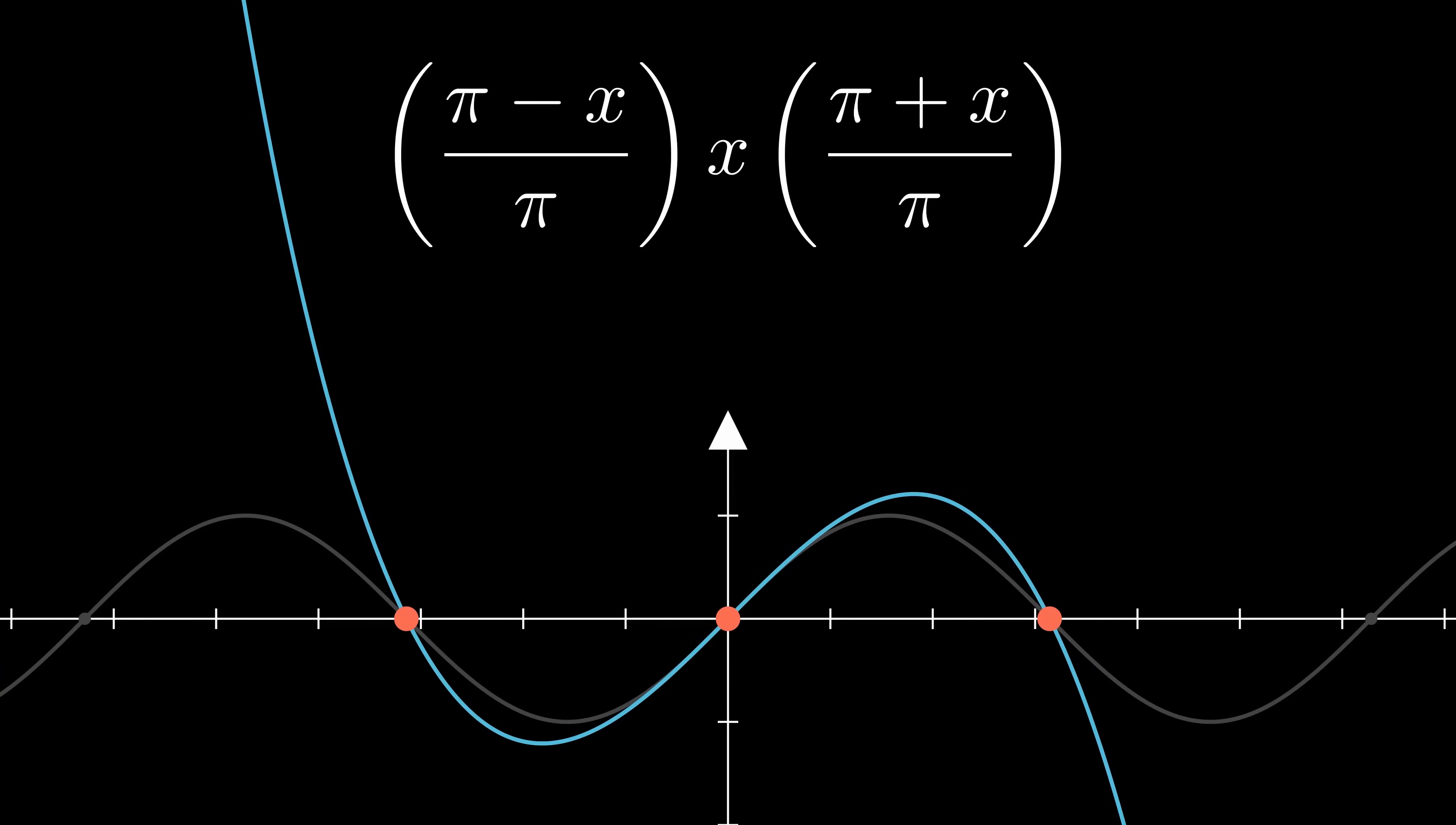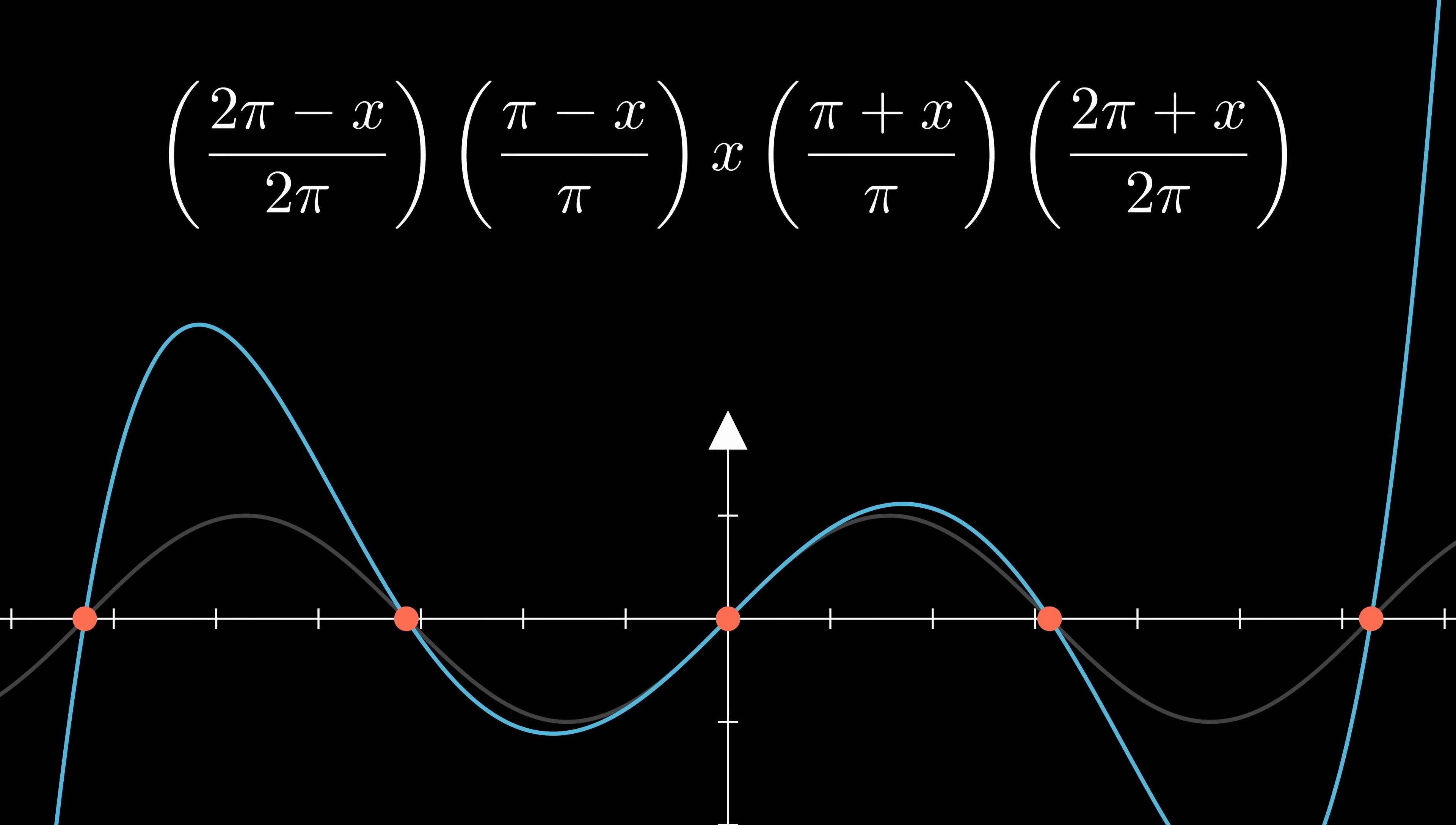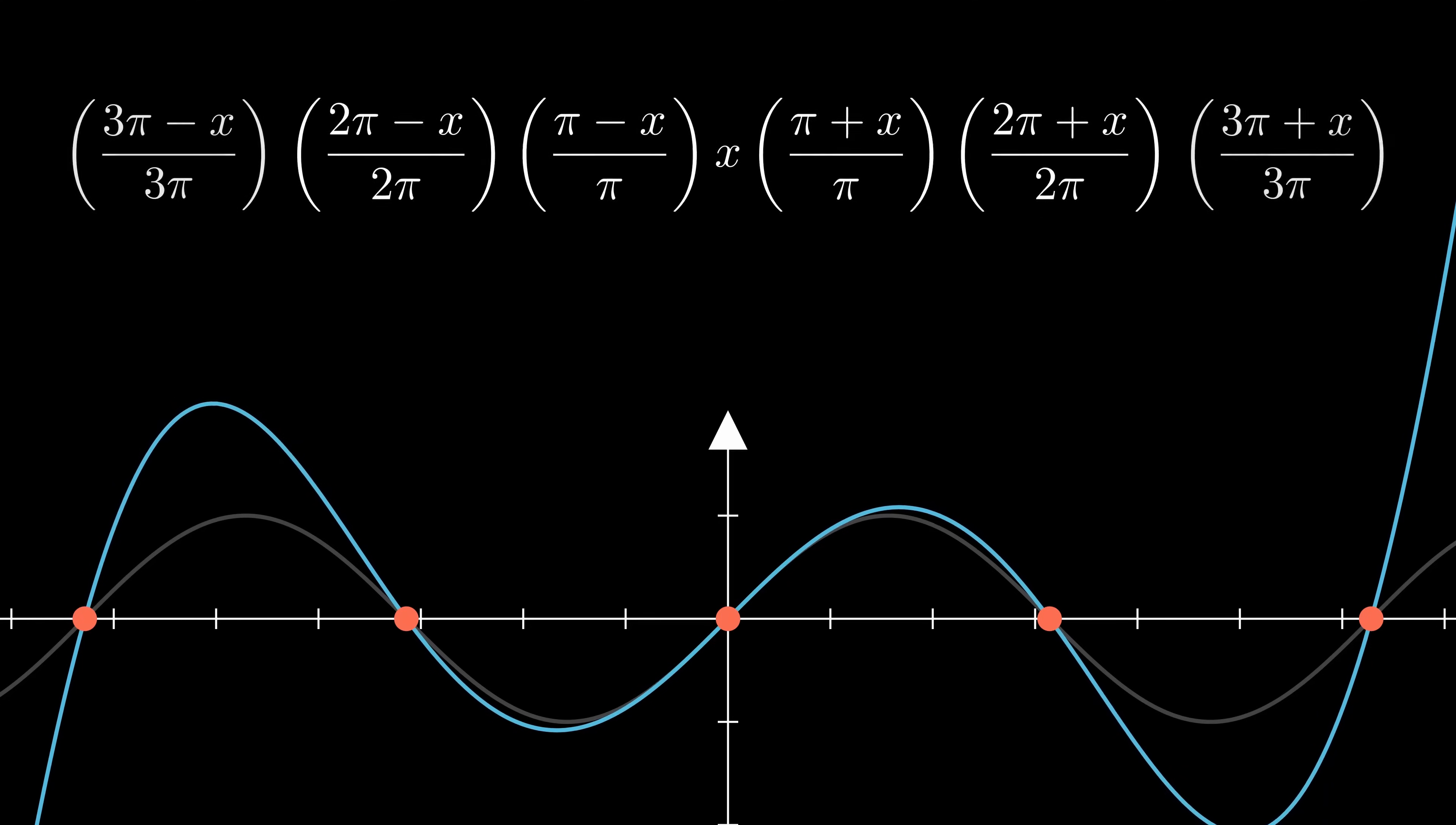Now our approximation is looking a lot better, so let's add the next two zeros at 2 pi and negative 2 pi. I've already divided both of these by 2 pi for the same reason. Then, continuing the pattern, we add the next zeros at 3 pi and negative 3 pi, and then, as we keep adding more and more, the function approaches sine.